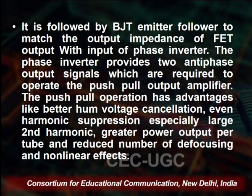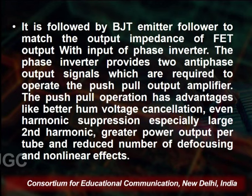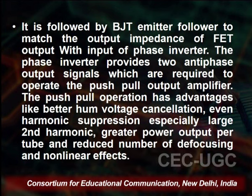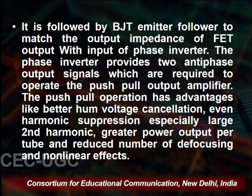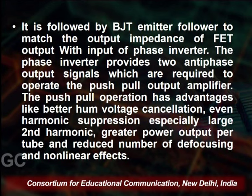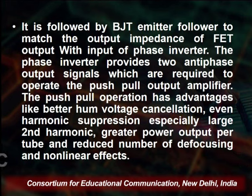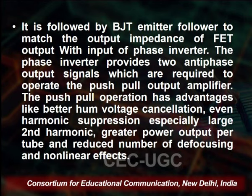With the phase inverter we have the main inverter. In the FET stage we have a phase inverter, then this output goes into the BJT, which is the main inverter. The phase inverter provides two anti-phase output signals which are required to operate the push-pull output amplifier. The push-pull operation has advantages like better hum voltage cancellation, even harmonic suppression especially the large second harmonic, greater power output per tube, and reduced defocusing and non-linear effects.